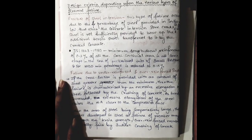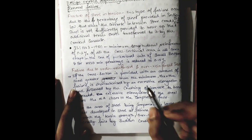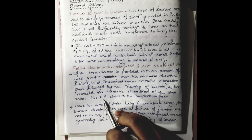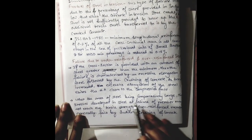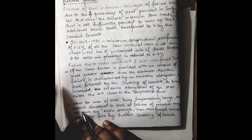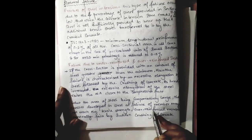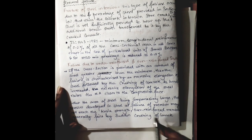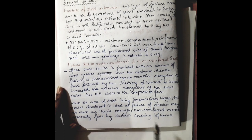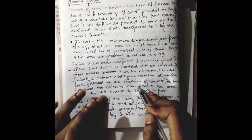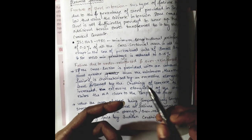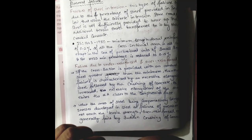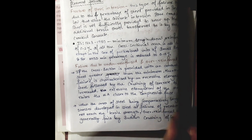In this case, this kind of beam is known to be in an under-reinforced condition. For over-reinforced section, when the area of steel is comparatively large, the stress developed in steel at failure of member may not reach tensile strength. Over-reinforced members generally fail by sudden crushing of concrete.